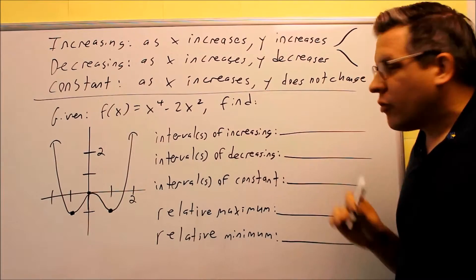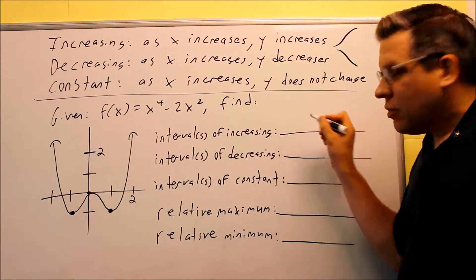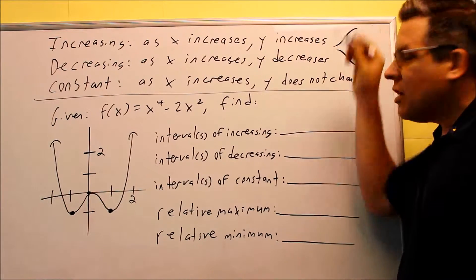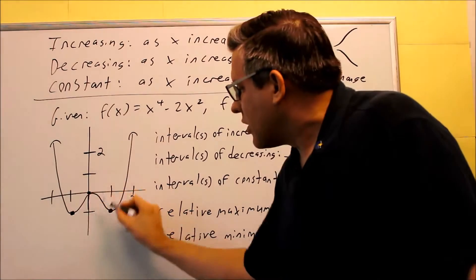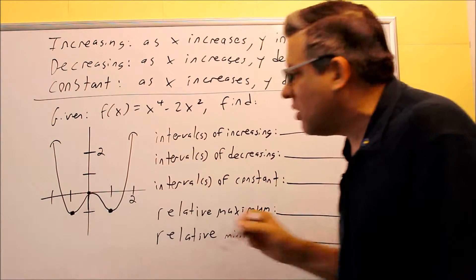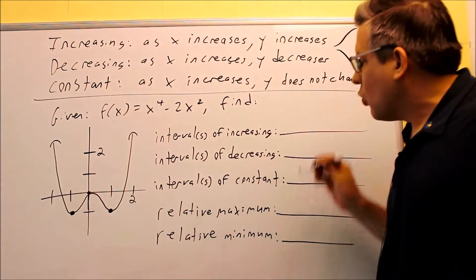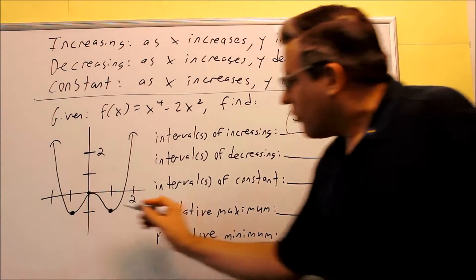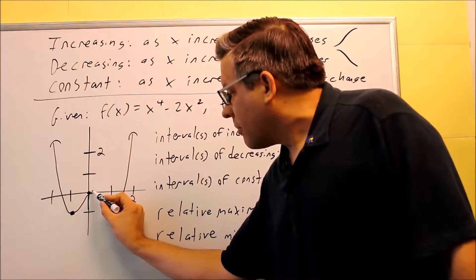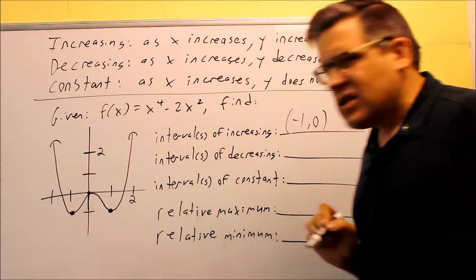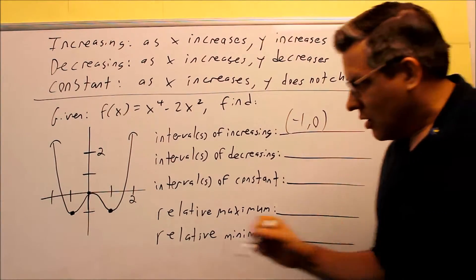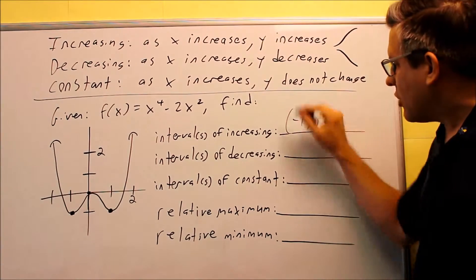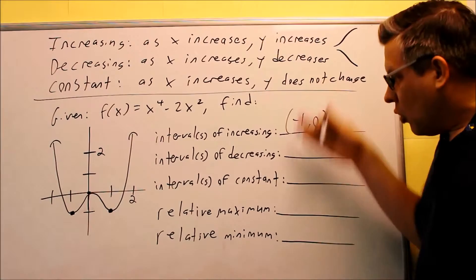We want to find the interval or intervals of increasing using interval notation. Increasing means as you move from left to right, you're looking for any part of the graph going uphill. There are two such sections. The first is between negative 1 and 0. I'm using parentheses here because at those endpoints, the graph has a horizontal tangent, meaning at those points it's technically not increasing or decreasing, so I'm not including the endpoints.